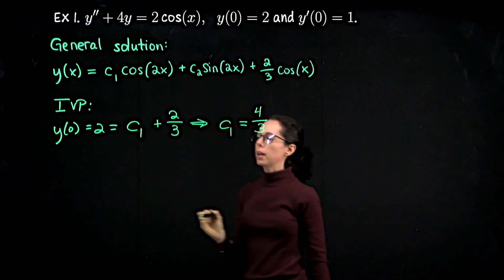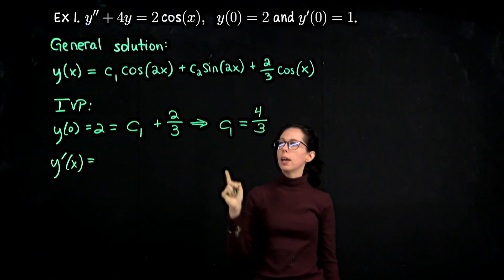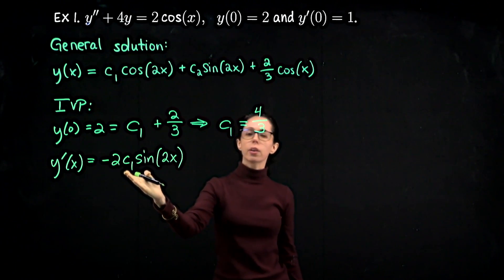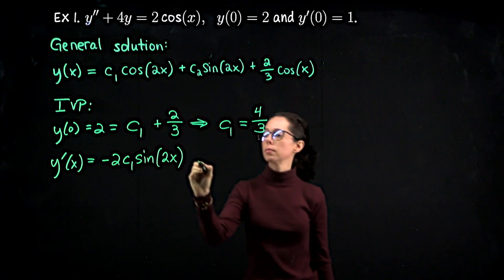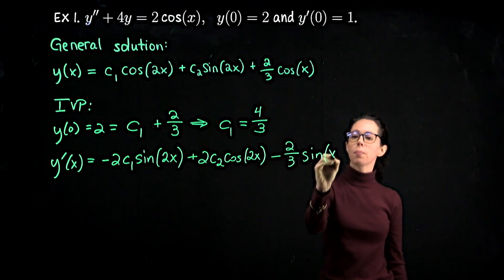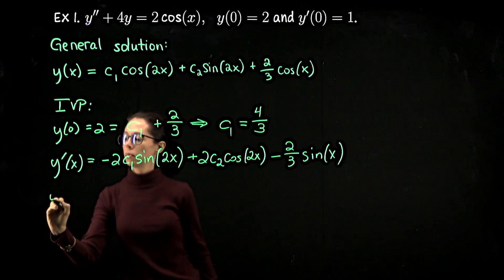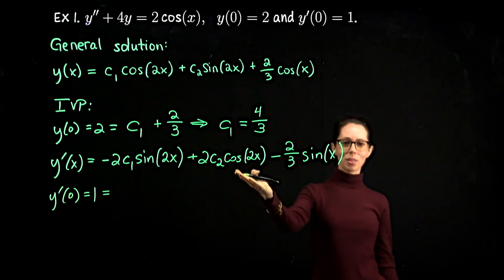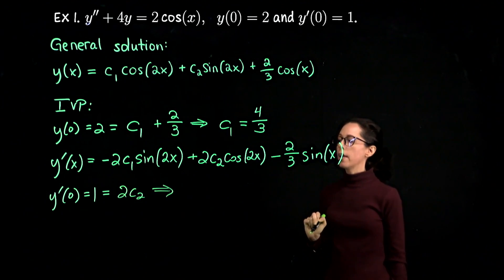Now let's differentiate so that we can apply the condition y prime at x equals zero equals one. Term by term, the derivative of y of x is negative two c1 sine of 2x — and we know c1 is four-thirds — plus two c2 cosine of 2x, minus two-thirds sine of x. Plugging in x equals zero: sine of zero is zero, cosine of zero is one, sine of zero is zero. So we just get two c2 equals one, giving us c2 equals one-half.